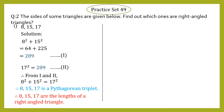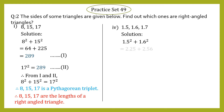Let's move to sub-question 4. The sides of a triangle are 1.5, 1.6, and 1.7. Step one: sum of squares of the two smaller sides, that is 1.5 and 1.6. So 1.5² + 1.6² = 2.25 + 2.56 = 4.81. This can be taken as equation 1.